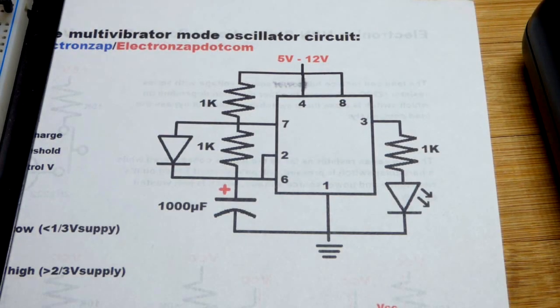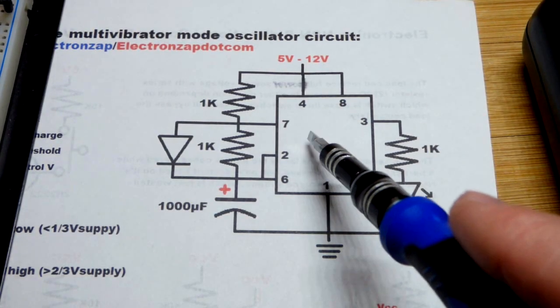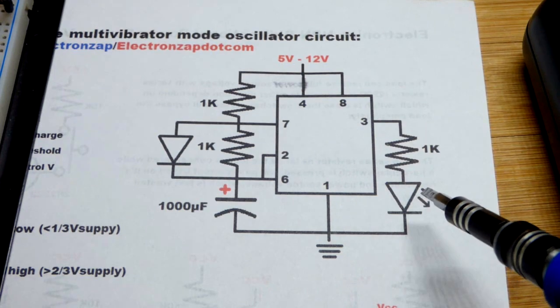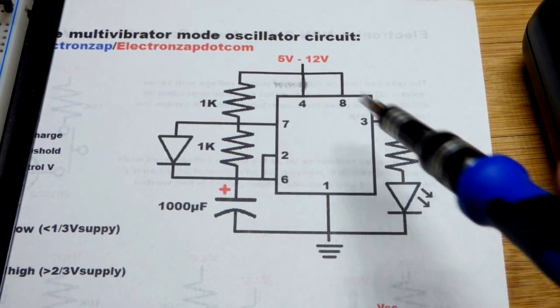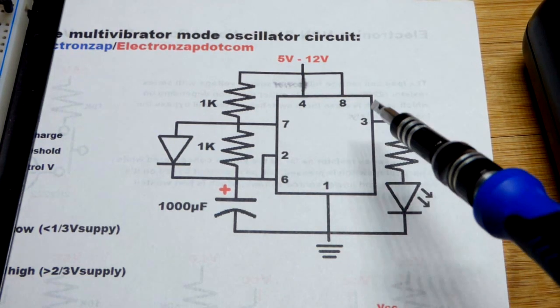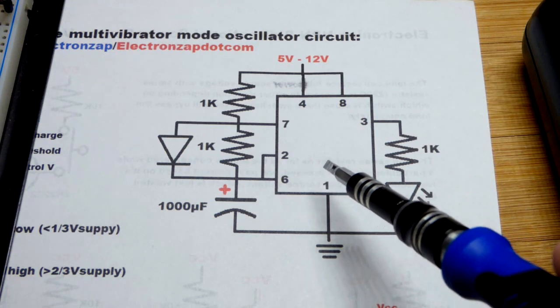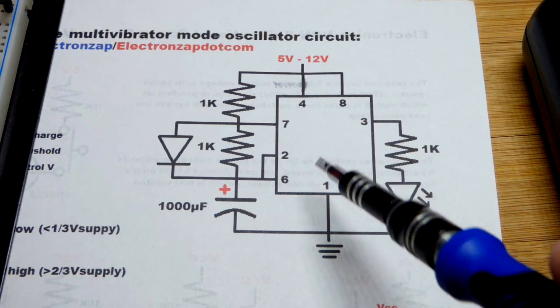In this video, we're going to look at the 555 timer. I forgot to write it in the square there, but this represents a 555 timer. This is an old sheet that I'm reusing. It is in astable mode.